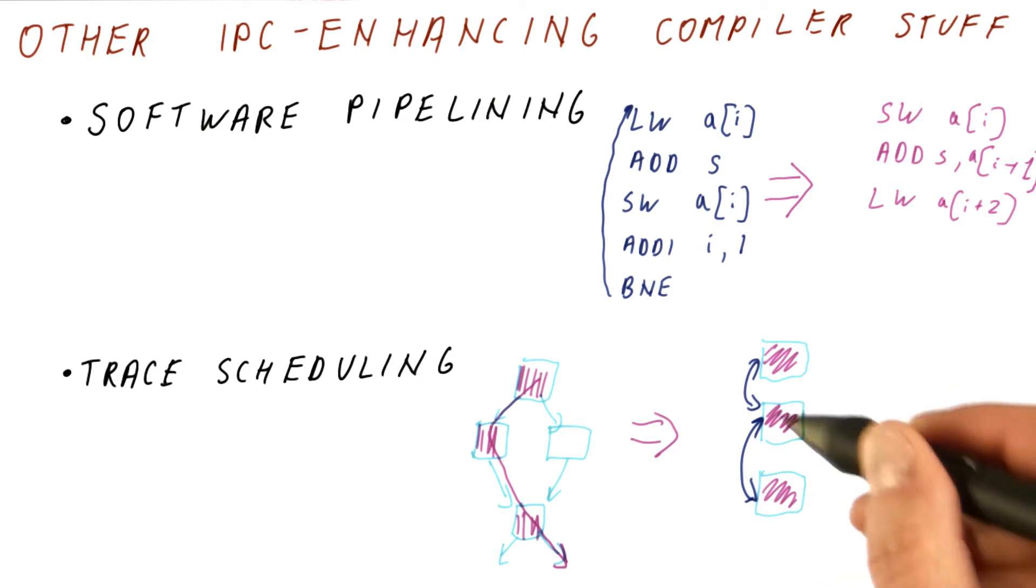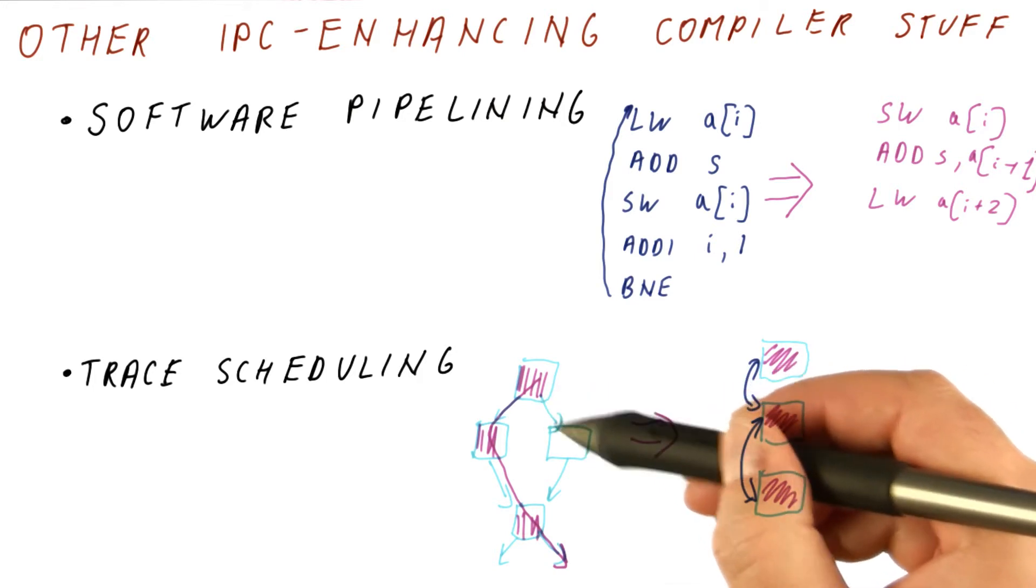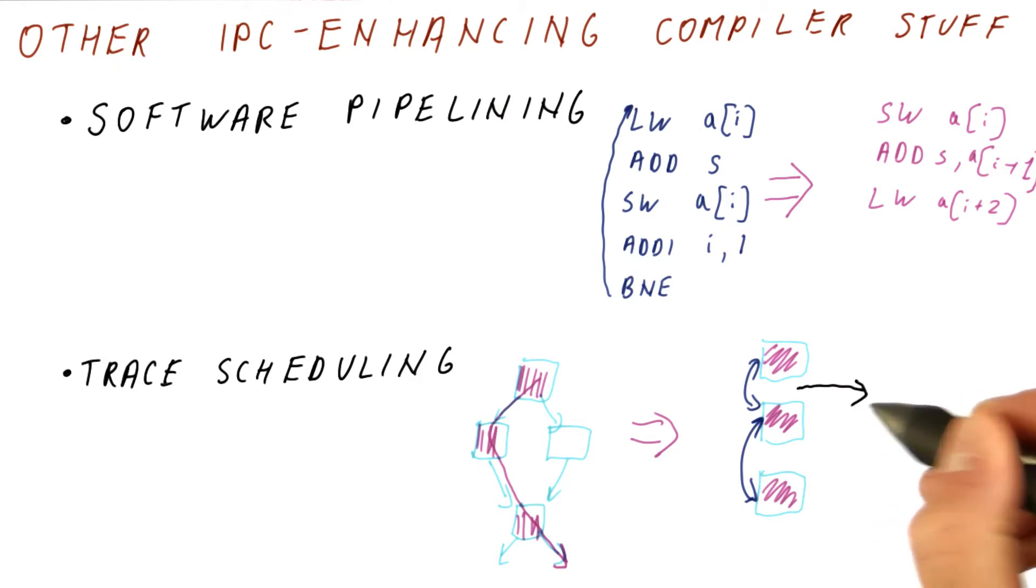And we also put checks if the common path is not being executed. For example, here, what if this path should have been executed? If that happens, we branch out of this scheduled code.